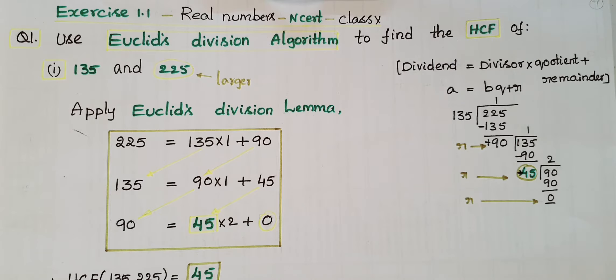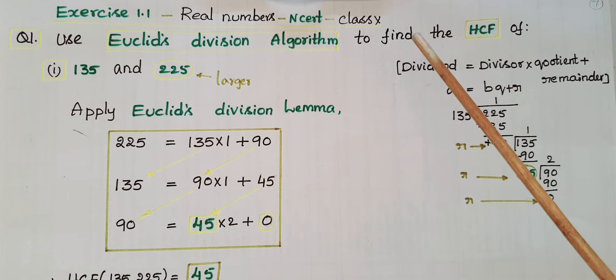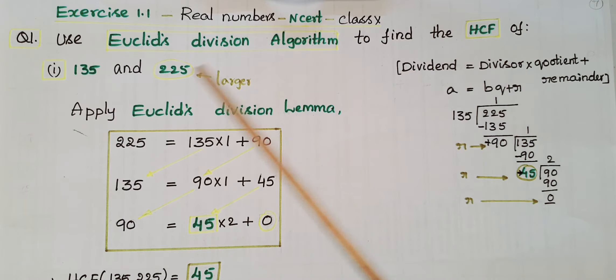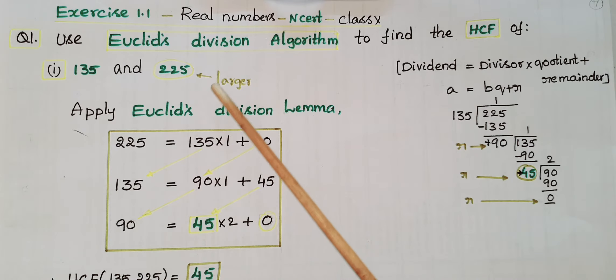Hello everyone, today I am going to tell the solution of the first problem from Exercise 1.1, Real Numbers, NCERT Class 10th. Use Euclid's division algorithm to find the HCF. The first one is 135 and 225.